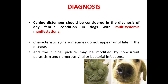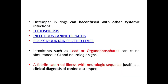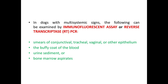Canine distemper should be considered in the diagnosis of any febrile condition in dogs with multi-systemic manifestations. Characteristic signs sometimes do not appear until late in the disease, and the clinical picture may be modified by concurrent parasitism and numerous viral or bacterial infections. Distemper in dogs may be confused with other systemic infections, so differential diagnosis with leptospirosis, infectious canine hepatitis, and Rocky Mountain spotted fever must be done. Intoxicants such as lead or organophosphates can cause simultaneous GI and neurologic signs.